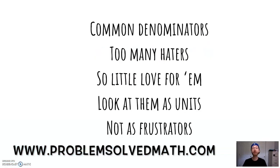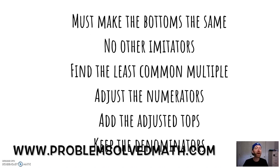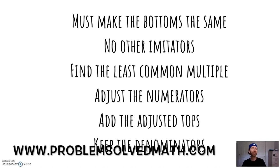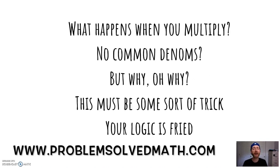Common denominators, too many haters, so little love for them. Look at them as units, not as frustrators. Must make the bottoms the same, no other imitators. Find the least common multiple, adjust the numerators. Add the adjusted tops, keep the denominators. What happens when you multiply?